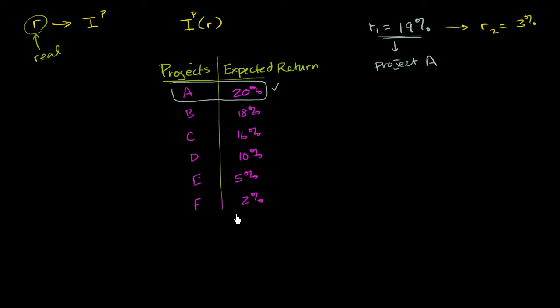The only one that you would not do is project F right over here. Because here, you aren't actually covering your cost of borrowing. If you had to borrow at 3% and invest at 2%, it doesn't make sense. If you have the money, you would rather lend your money out at 3% than do project F. So you're definitely not going to do F in this scenario. And actually, you obviously do it in neither scenario.